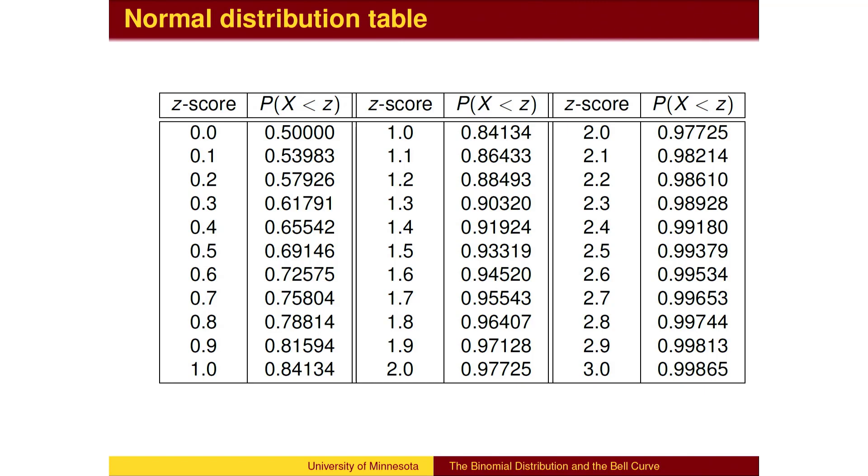Here is the other half of the table for positive z-scores. Many sources only give this half, ignoring the negative half, which can be found by using the symmetry of the bell curve.